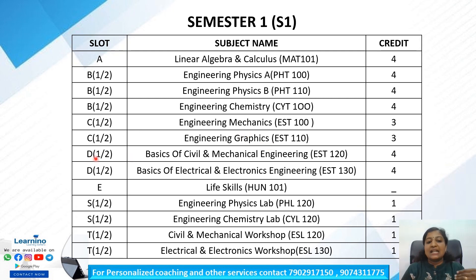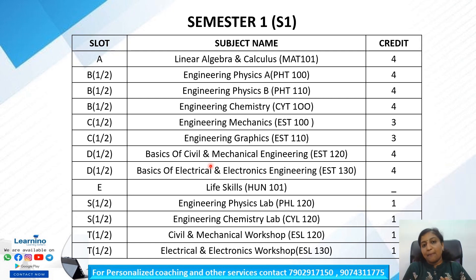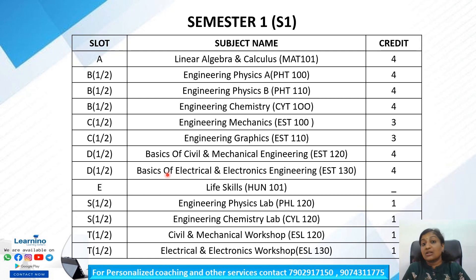We have a new subject — that is C slot. D slot is the Basics of Civil and Mechanical Engineering. There are 5 modules — 2 combination subjects. D slot: Basics of Civil and Mechanical Engineering. There are also Basics of Electrical and Electronics Engineering. There are 6 modules now: EST 120 — Mechanical, 3 modules; EST 130 — Electronics, 3 modules.